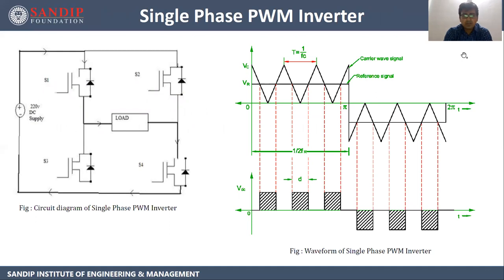Single phase PWM inverter — the circuit diagram is the same as the single phase full bridge inverter. In this, we have one reference signal and one carrier signal. The carrier signal is a triangular signal which is compared with the rectangular reference signal. The intersections determine the output pulses we get across the load. The output is VDC pulses which can be of the same or different widths. This is called a PWM inverter.